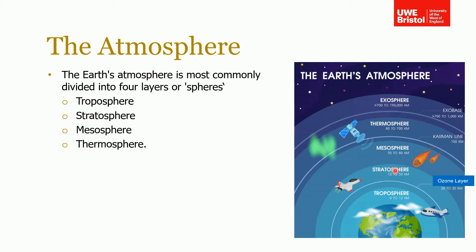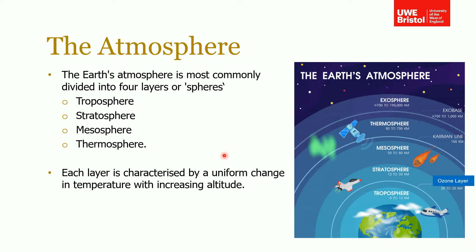The atmosphere gets thinner as you go higher. Then you get into the mesosphere, which is where you see meteorites striking the atmosphere. If you keep going up, once you get above the Kármán line — which is 100 kilometers above the Earth — that's the official boundary of outer space. Above that line you're officially in space, and that's where our satellites are. Each layer is characterized by a change in temperature with increase in altitude.